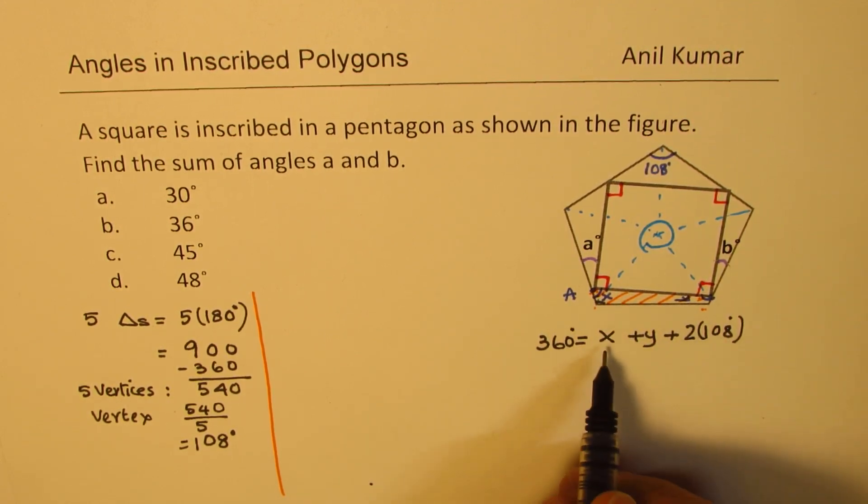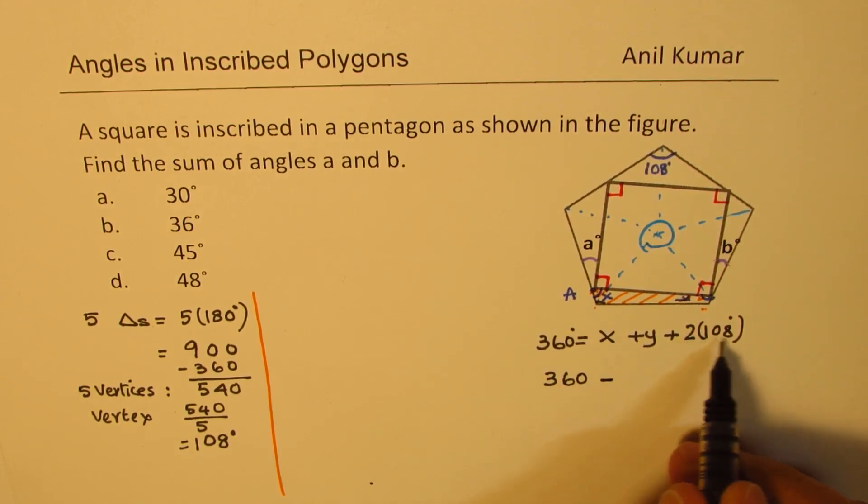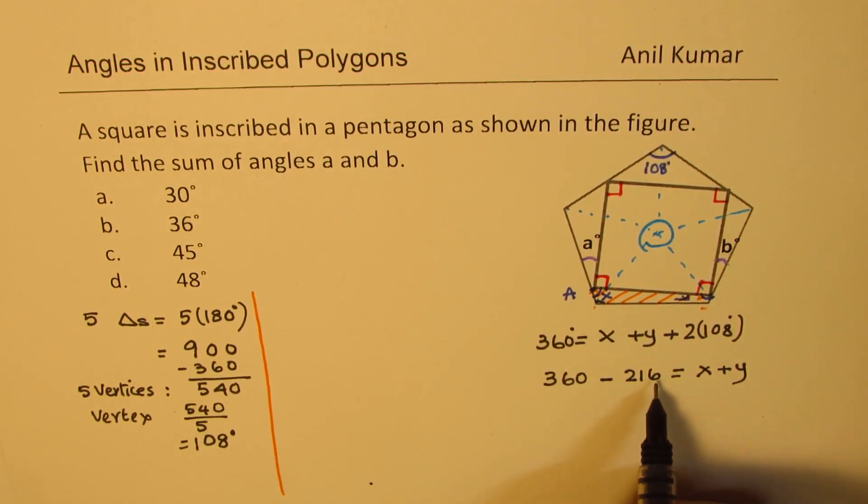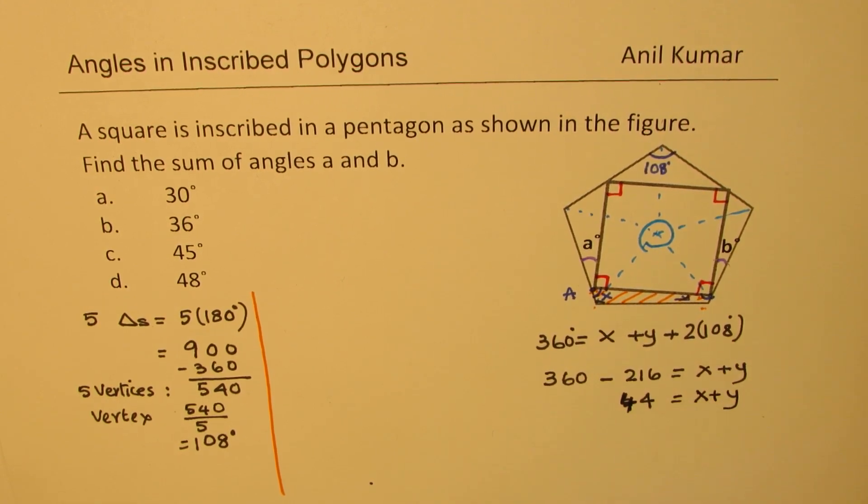So that gives you that X plus Y is 360 degrees minus 2 times 108, which is 216. So X plus Y equals—taking away 216 from 360, we get 144 degrees. So 144 degrees is sum of X plus Y.